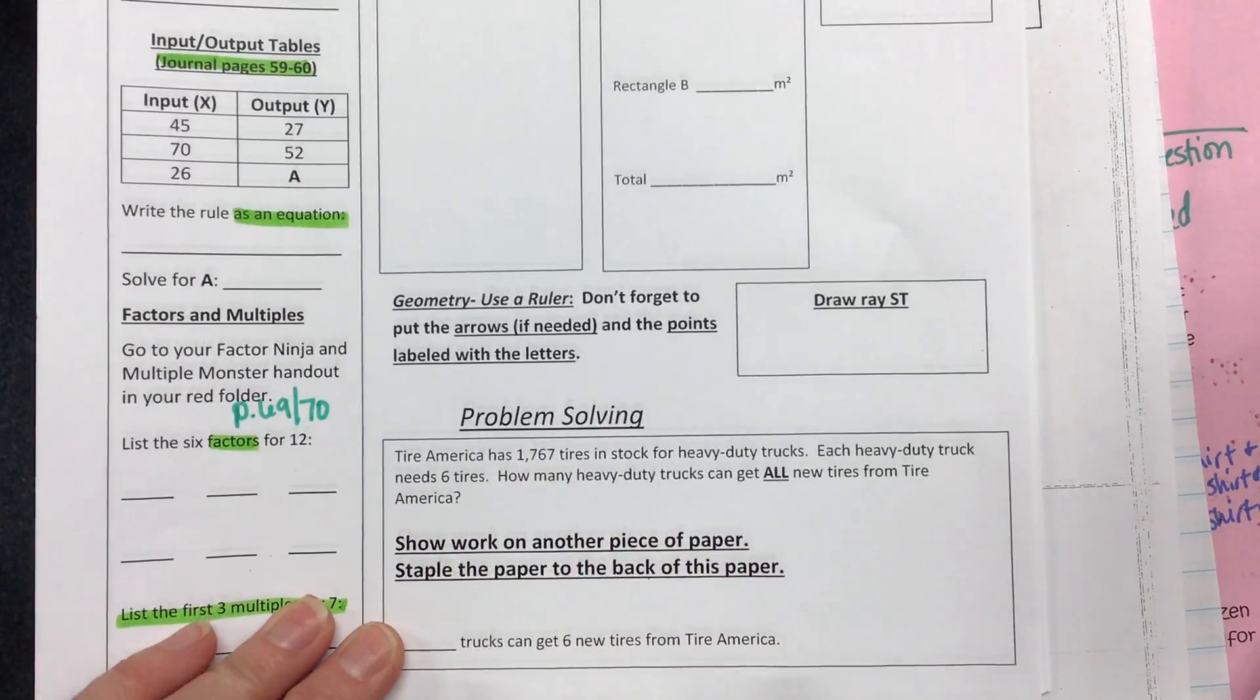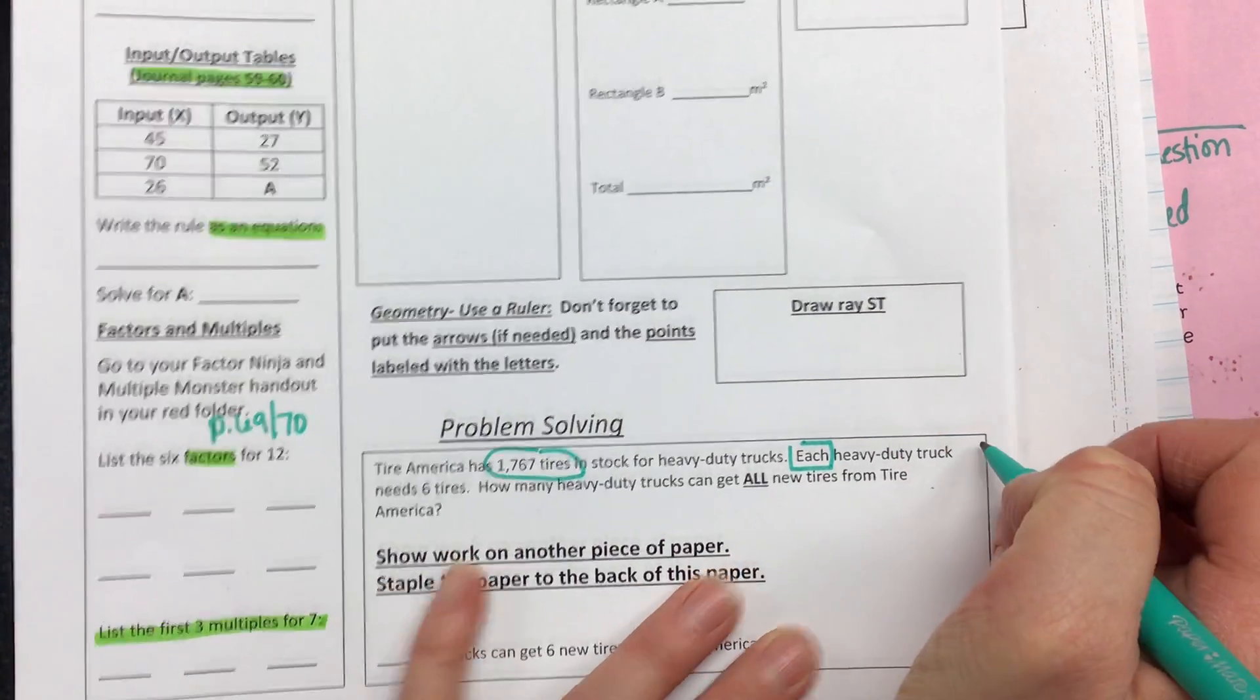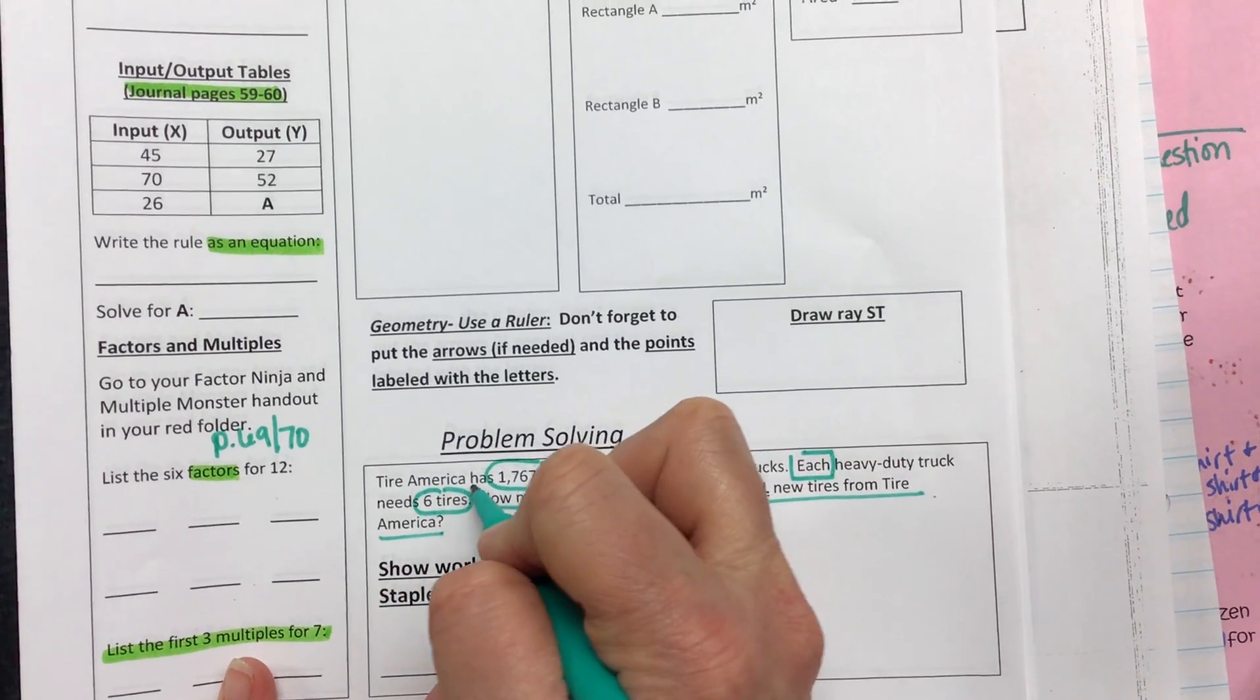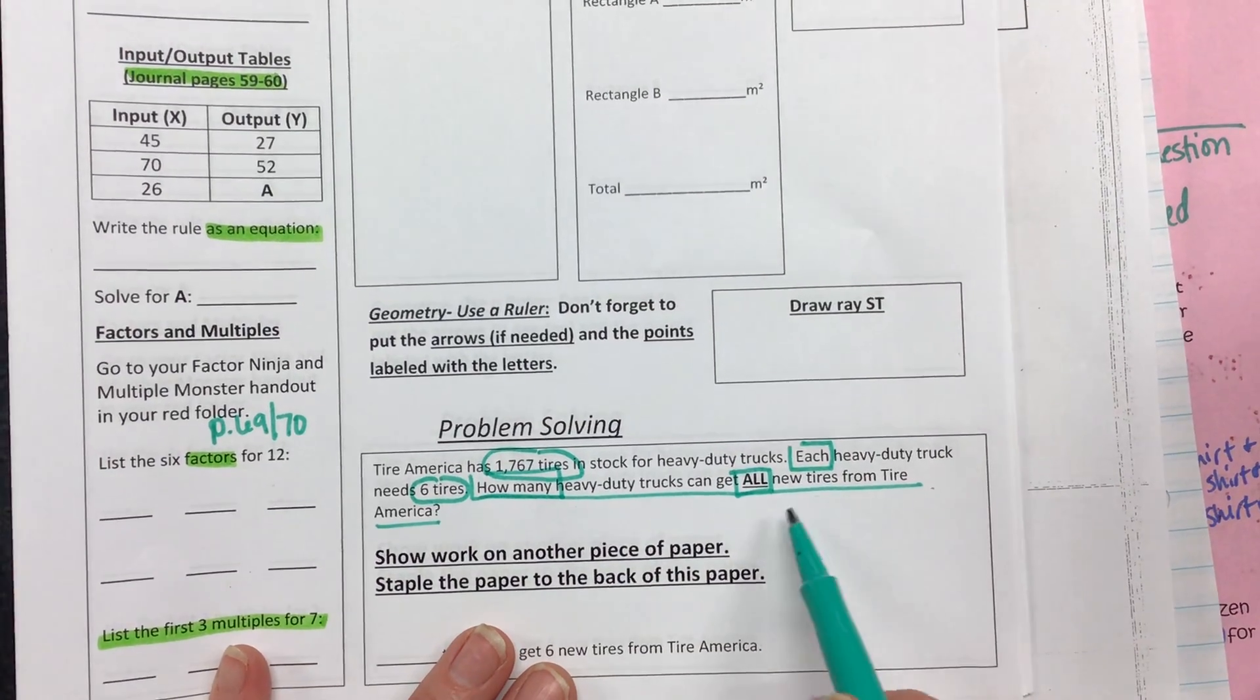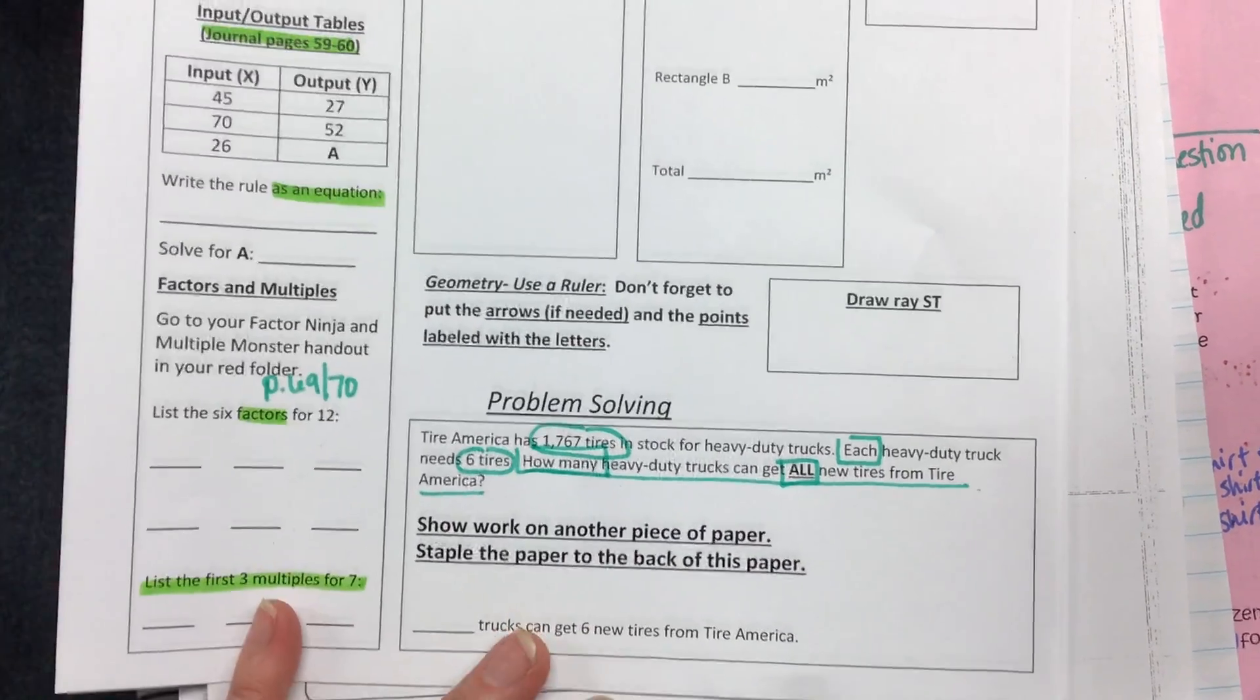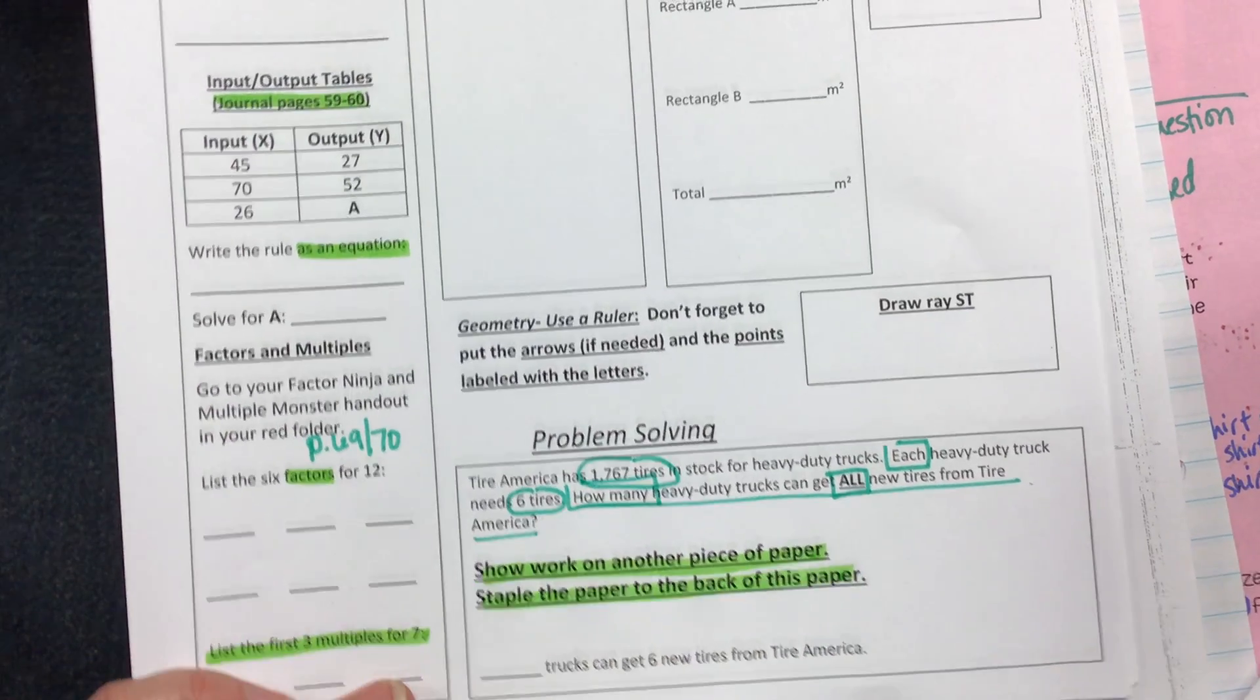Tire America has 1,767 tires in stock for heavy-duty trucks. Each heavy-duty truck needs six tires. How many heavy-duty trucks can get all new tires from Tire America? So that means if there's a remainder of two, that truck did not get new tires. It has to have four new tires.